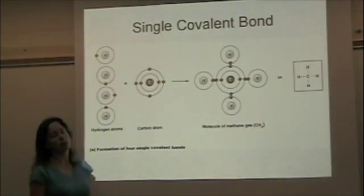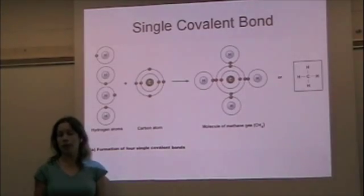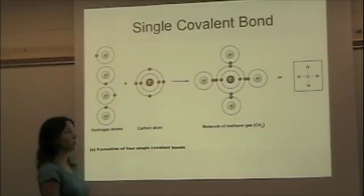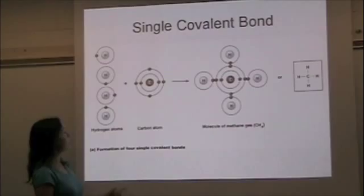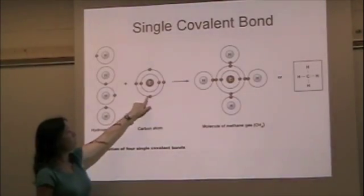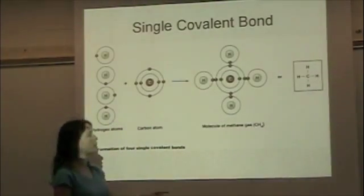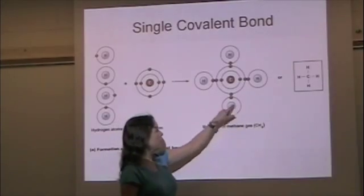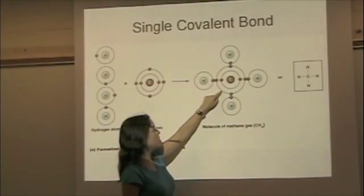Hydrogen only has one electron in its outer shell, and it would like to have two to be most stable. So what happens is that hydrogen joins with carbon and they share two electrons, forming methane gas, or CH4.